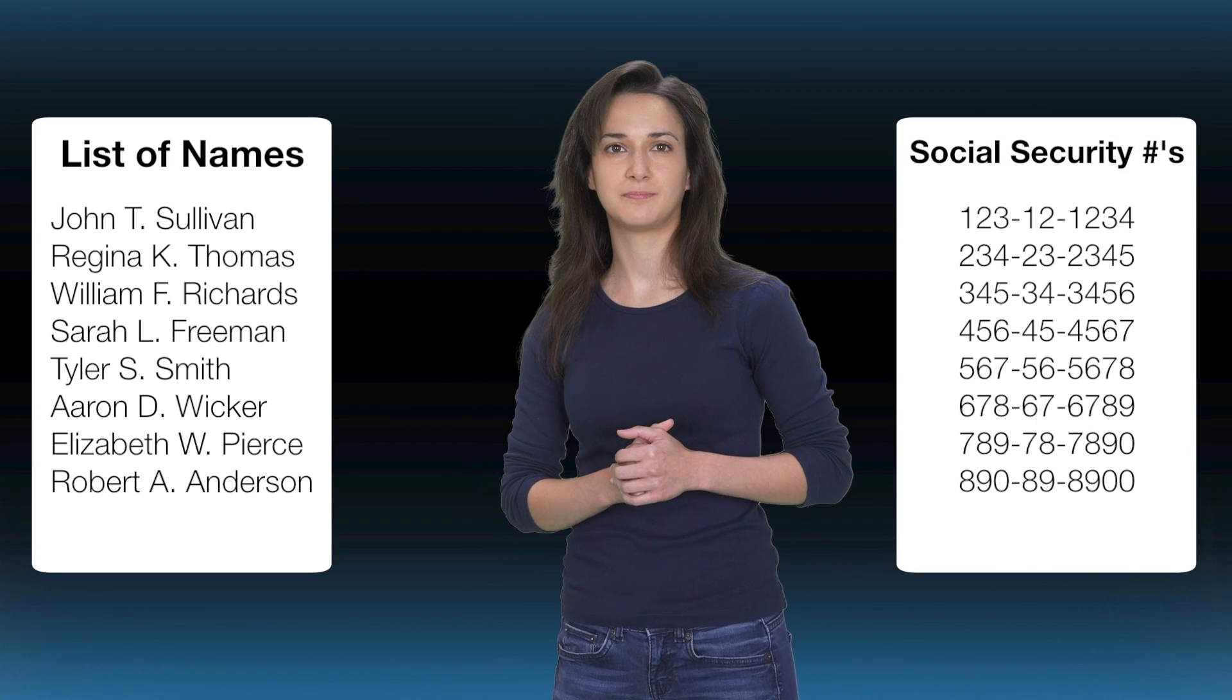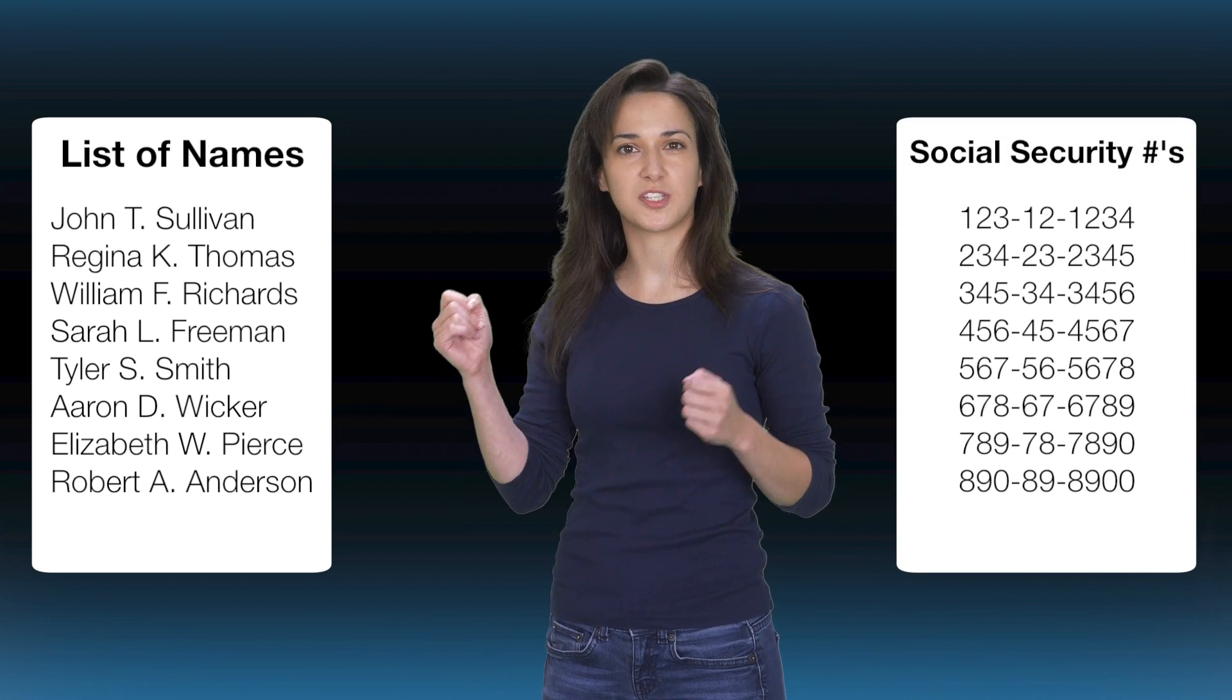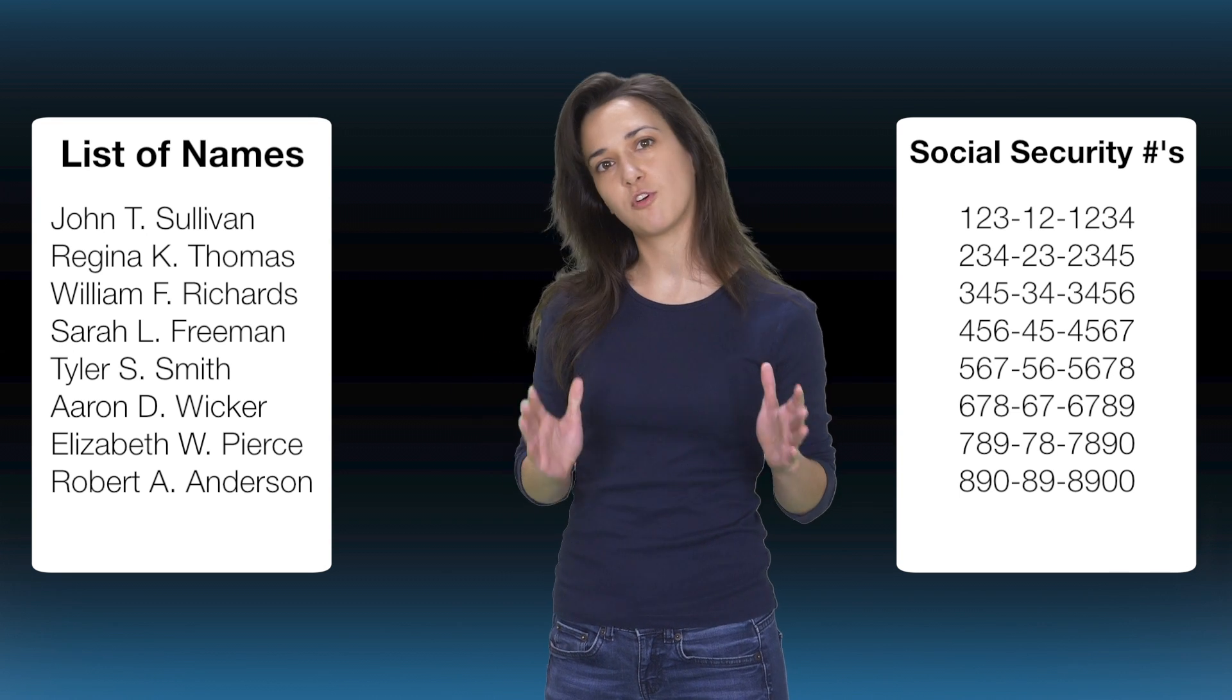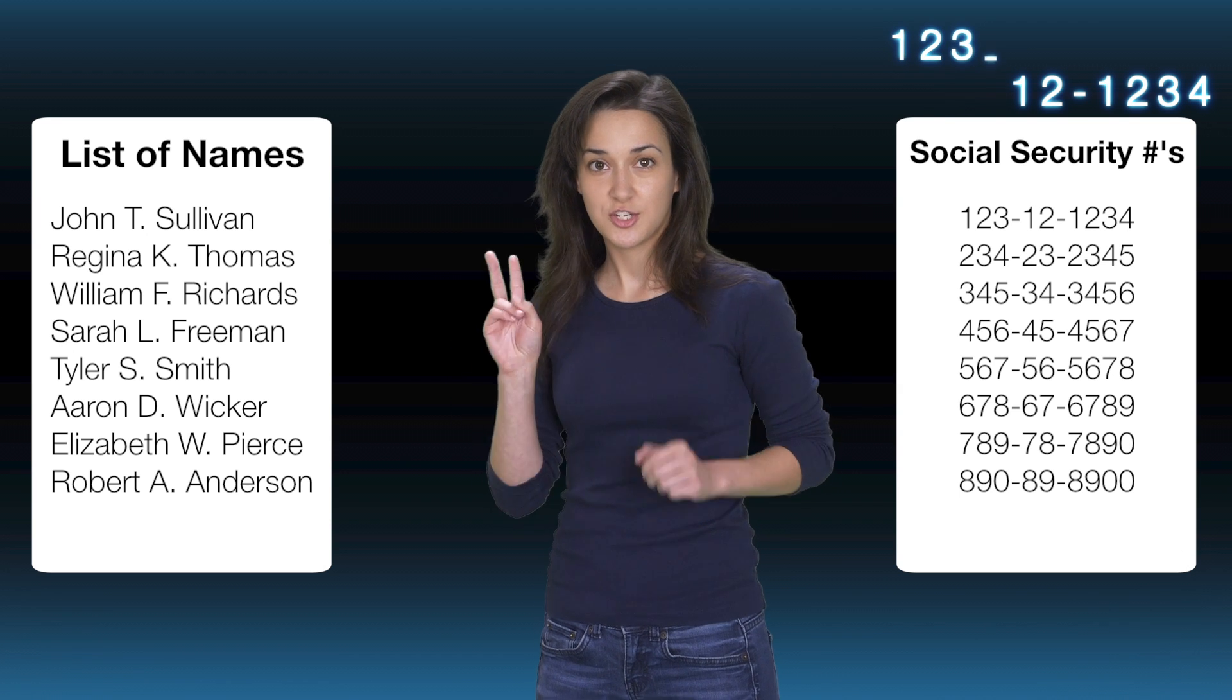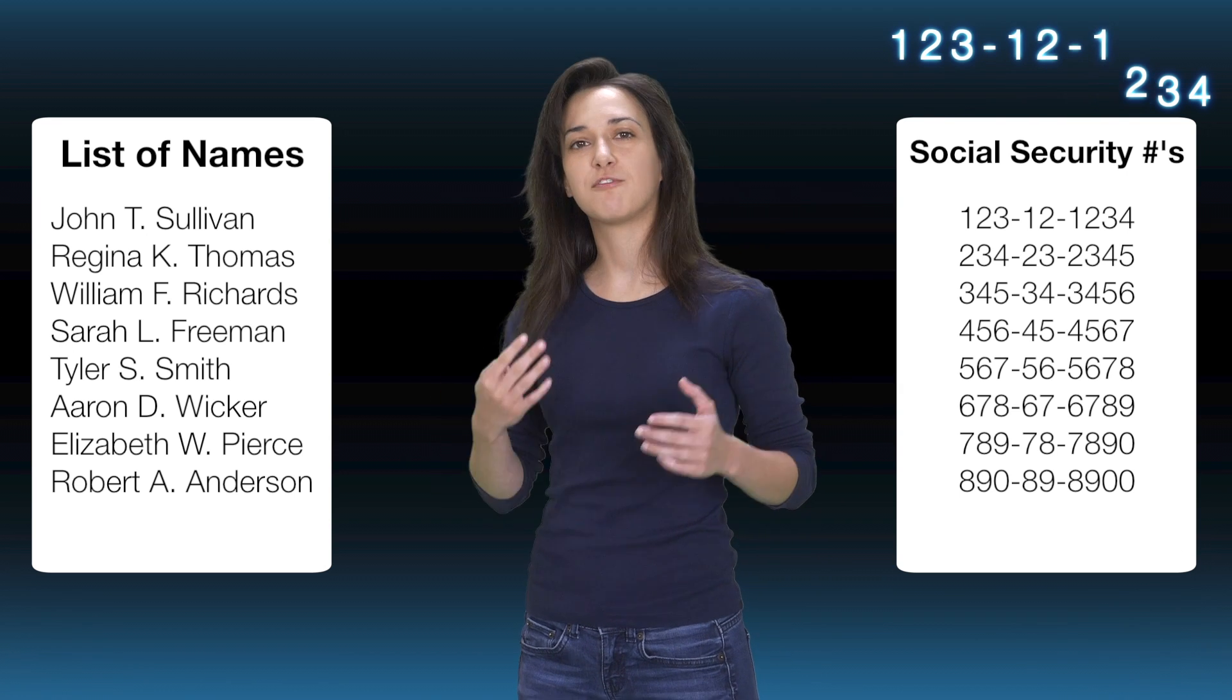Next, let's imagine a list of unassigned social security numbers. You can see all of these social security numbers are in a standardized format. Each social security number contains a set of three whole numbers, a dash, two whole numbers, a dash, and four whole numbers.